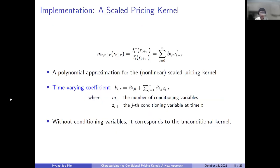To explain how I estimate the pricing kernel, let me first define a scaled pricing kernel, which I denote as small m, as the ratio of the risk-neutral density to the physical density without the risk-free discount factor. I assume that this scaled pricing kernel is a non-linear function of the market return and approximated with a polynomial function. Here, B_IT is a time-varying coefficient of the pricing kernel, which is expressed as a linear function of a conditioning variable Z_JT. Without conditioning variables, it corresponds to the unconditional pricing kernel.